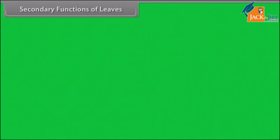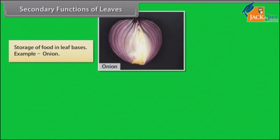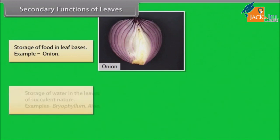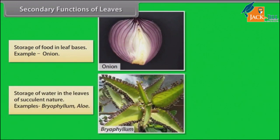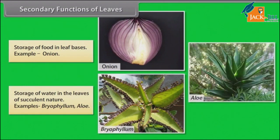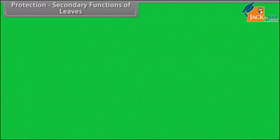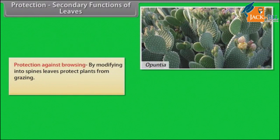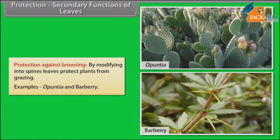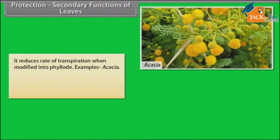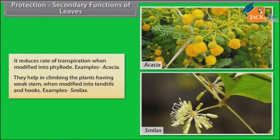Secondary functions of leaves include: storage of food in leaf bases, example onion; storage of water in the leaves of succulent plants, example Bryophyllum and Aloe. Protection against browsing — by modifying into spines, leaves protect plants from grazing, example Opuntia and Berberis. Leaves also reduce the rate of transpiration when modified into phyllodes, example Acacia. They help in climbing in plants having weak stems when modified into tendrils and hooks.